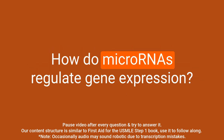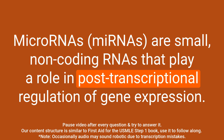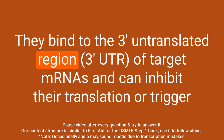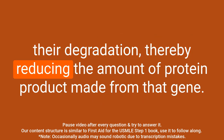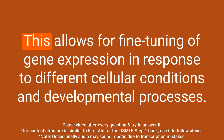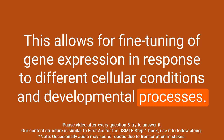Question: How do microRNAs regulate gene expression? Answer: MicroRNAs are small, non-coding RNAs that play a role in post-transcriptional regulation of gene expression. They bind to the 3' untranslated region of target mRNAs and can inhibit their translation or trigger their degradation, thereby reducing the amount of protein product made from that gene. This allows for fine-tuning of gene expression in response to different cellular conditions and developmental processes.